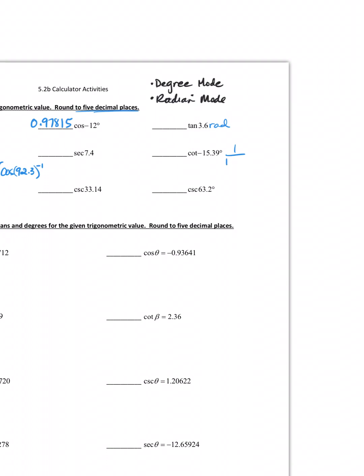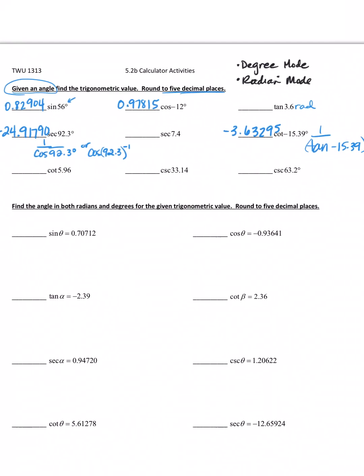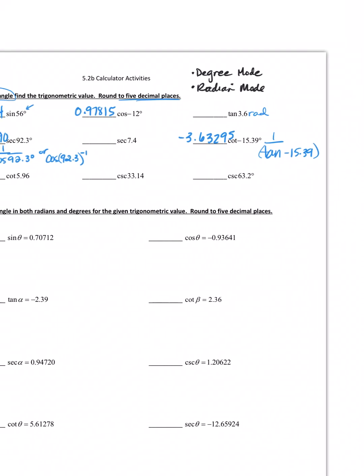Let's jump over - my next degree one is this cosecant, so that would be 1 over the sine of 63.2 degrees. Cotangent is 1 over the tangent of negative 15.39. Try it in your calculator, I get negative 3.63295. Then cosecant would be 1 over sine of 63.2 degrees. Put that in, I get 1.12034.